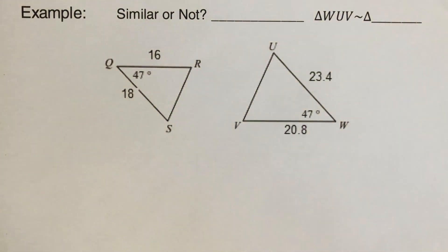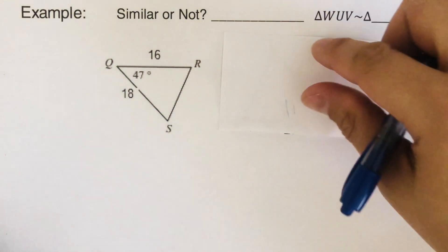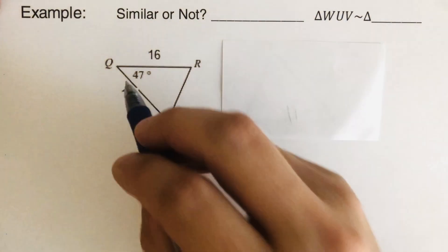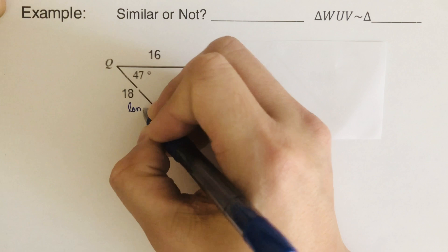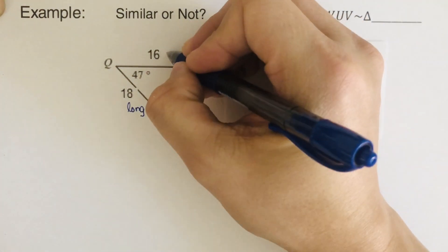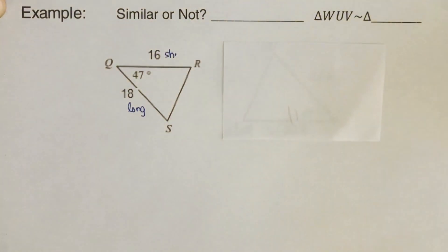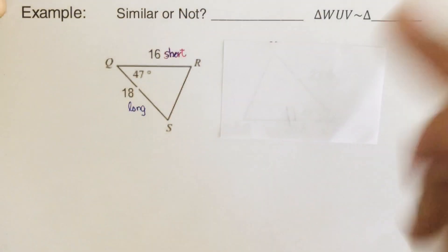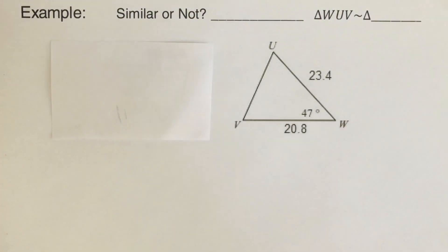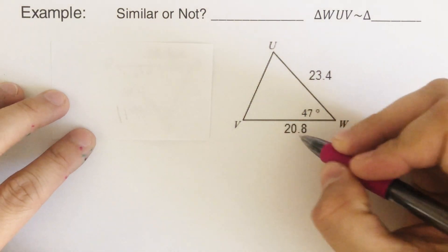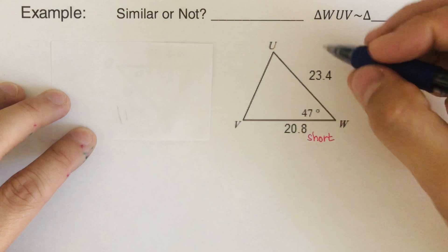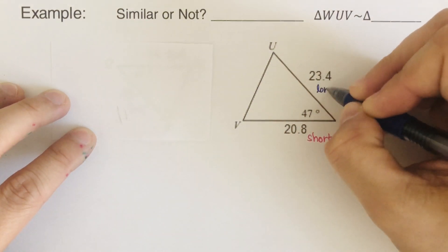So first, we determine, we label first which one is the long, which one is the short. So this side right here, or this triangle, this is the long side. And this is the short side. So I'm going to use a different color for short. So that's the short side. In this problem right here, this is the short side. And this is the long side.